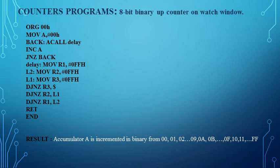An 8-bit up counter counts from 00h to FFh. Now we will start with the code. The first instruction we have written is MOV A, 00h. This means we are loading the accumulator register A with the value 00h. Soon after that, we are calling a delay subroutine using the instruction CALL delay.